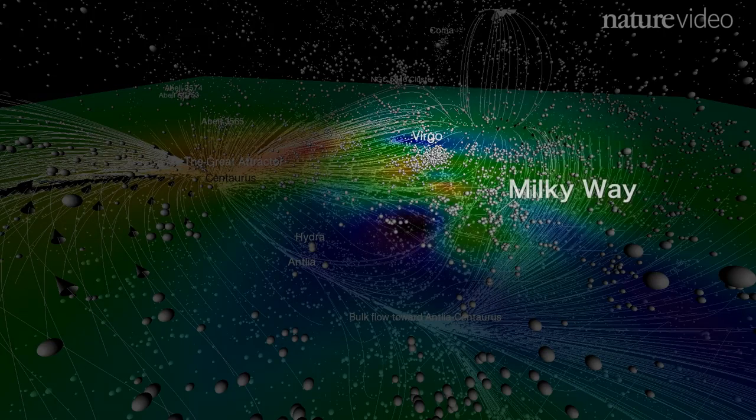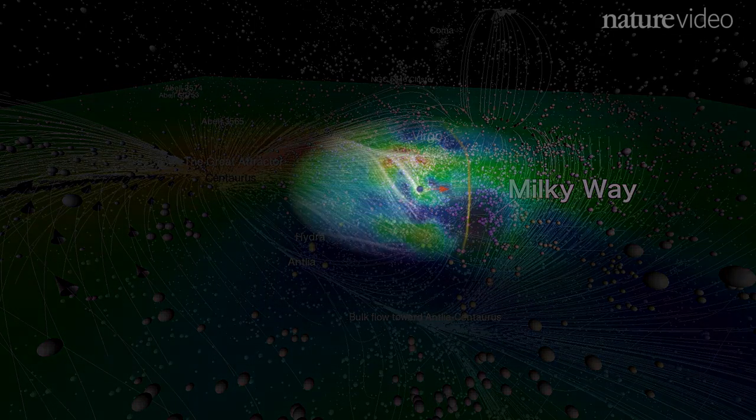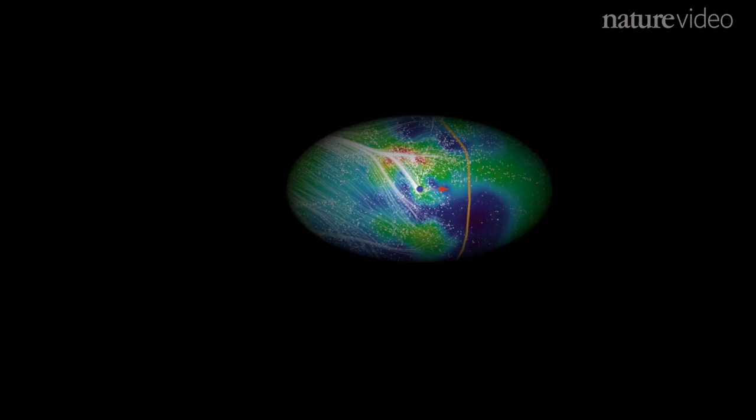Until now, astronomers grouped us, the Milky Way and its surrounding galaxies, with Virgo and nearly a hundred other clusters in a supercluster that stretches a hundred million light-years across. But using this new technique, we can see that this is just the tip of the iceberg.